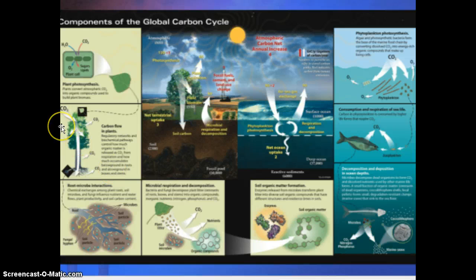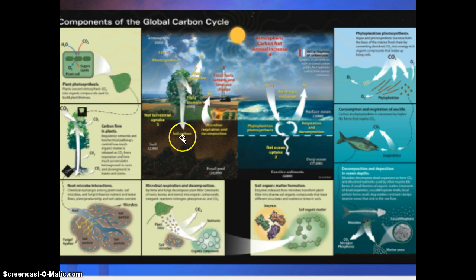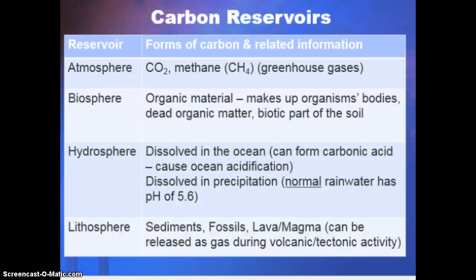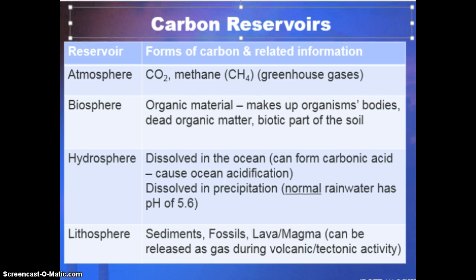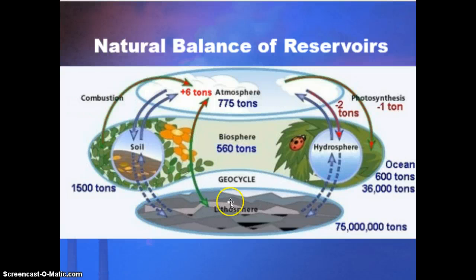One major thing to notice in this picture is that the same processes happening in land environments are also happening in the ocean — you just have different producers and organisms in the food chain, but essentially the same things are occurring. We have what we call carbon reservoirs, which are places where carbon is found. Pause and write down what these reservoirs are and what types of carbon are found in each.